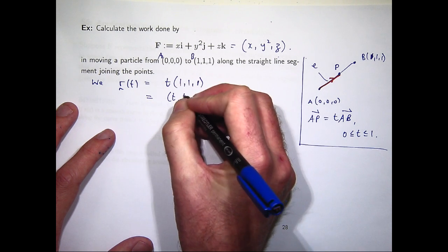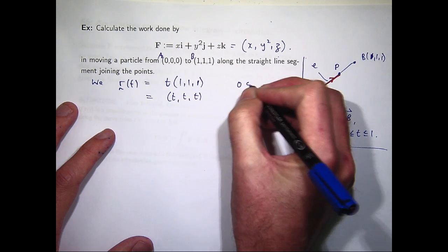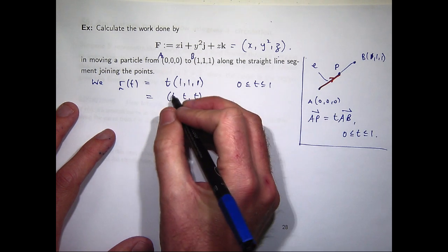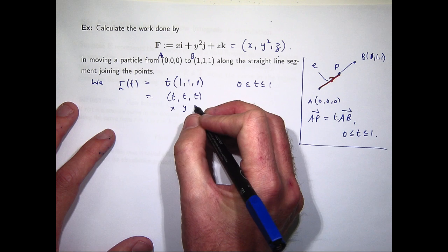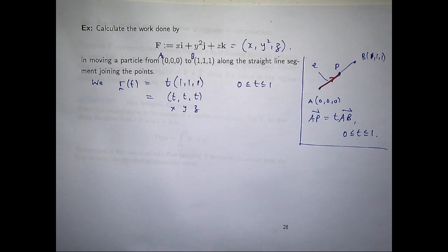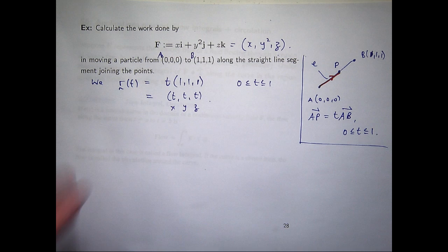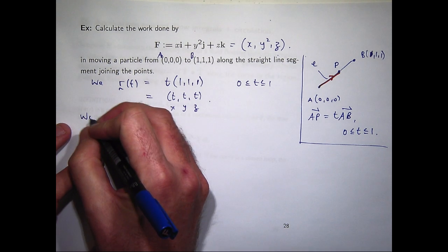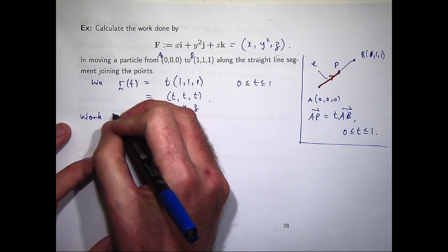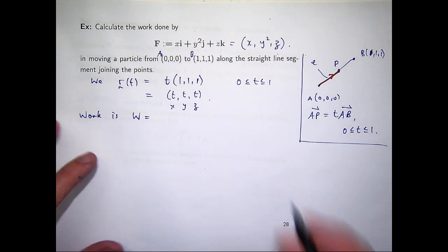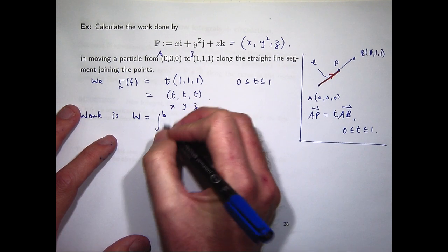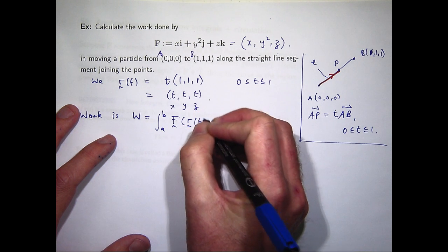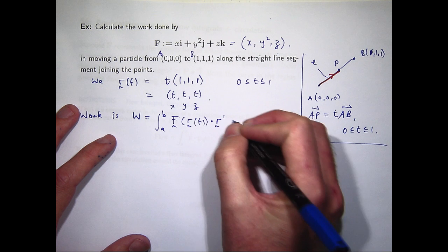So if you write it as an ordered triple, it would be like this. So think of the first component as X, the second component is Y, and the third component is Z. So we've done that. What we want to do, is calculate this integral here.